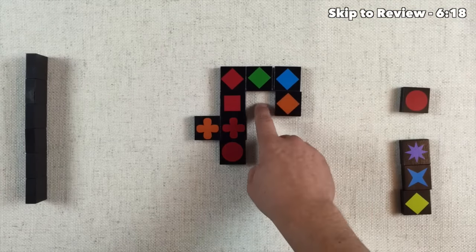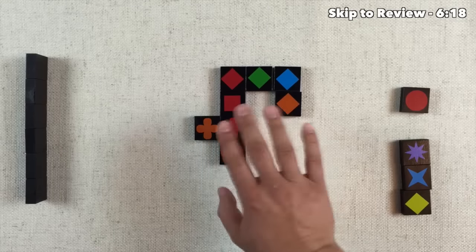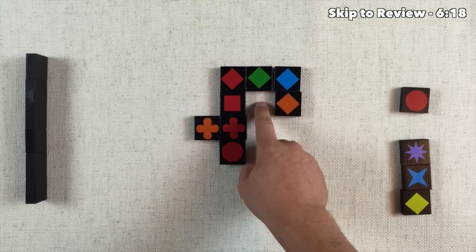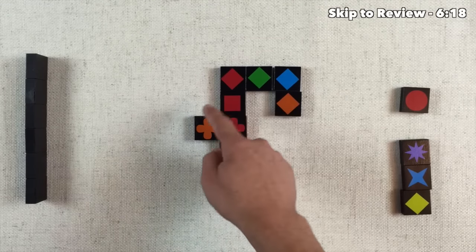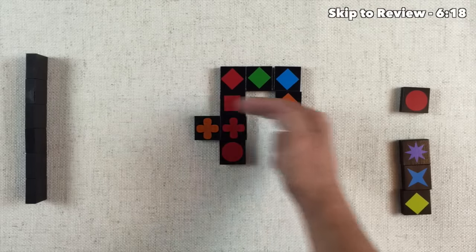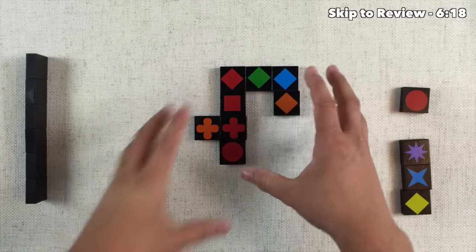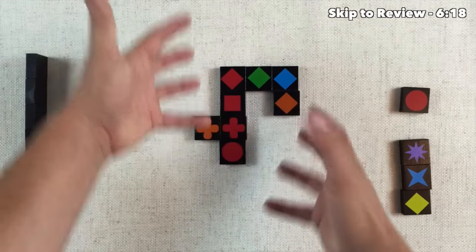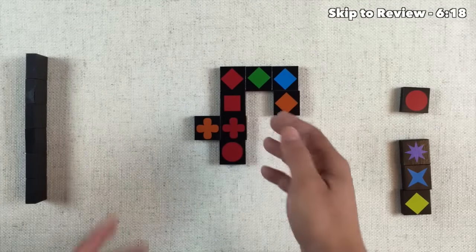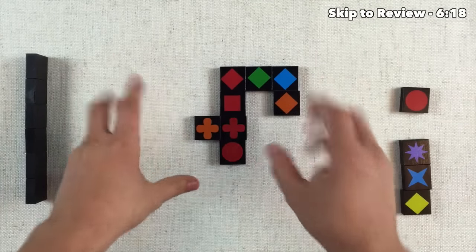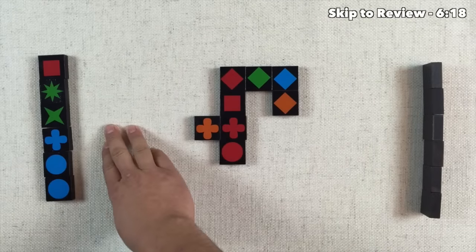This is also interesting because we now have a dead spot on the table where no tile will ever be able to be placed because by going here it would break one of those two rules. As the table gets bigger, you're going to start to have weird holes and spots that really force the tiles to go in all sorts of different directions.